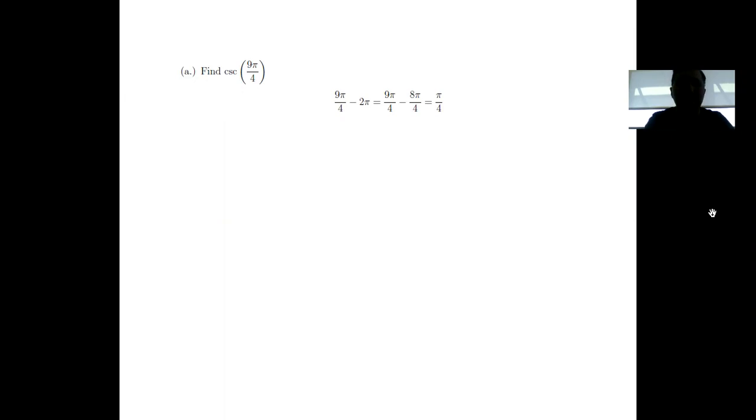The first step in these problems is to find an angle coterminal to 9π over 4 which is less than 2π. The reason we want to do this is that we prefer to know what 9π over 4 is on the unit circle. And then we'll be able to determine the value of this trig function, because we'll know what the coordinate pair corresponding to the angle on the unit circle is.